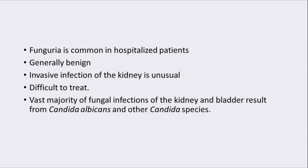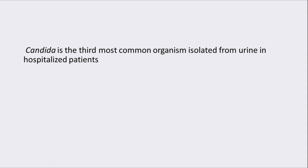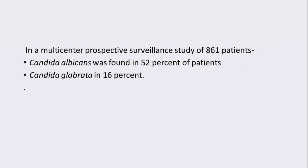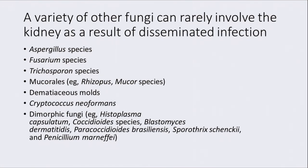As we all know, funguria is common in hospitalized patients and is generally benign, but invasive infection of the kidney is unusual and difficult to treat. The vast majority of fungal infections of the kidney and bladder result from Candida species, especially Candida albicans. Among all patients of UTI, Candida is the third most common organism isolated. In a multicenter prospective surveillance study involving 861 patients, Candida albicans was found to be responsible in 52% of patients and Candida glabrata in 16% of fungal UTI cases. A variety of other fungi which rarely can cause fungal UTI and disseminated infections are also noted.